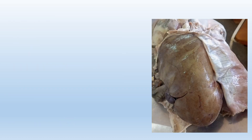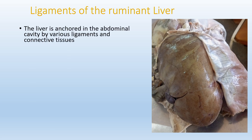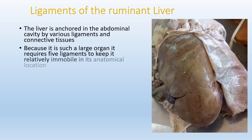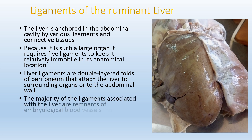Several ligaments help to fix or anchor the liver in its normal location within the abdominal cavity. Because it is such a large organ, about five ligaments are required to keep it in relative immobility in its anatomical location. These liver ligaments are double-layered folds of peritoneum that attach the liver to surrounding organs or the abdominal wall. The majority are remnants of embryological blood vessels that regressed as the fetus developed in the uterus.